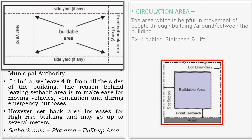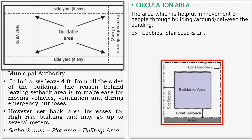The last point is circulation area — the area which is helpful in the movement of people through, around, or between buildings. By the name itself it is understood: lobbies, staircases, and lifts in a building or apartment are called the circulation area. The main points of discussion were plinth area, carpet area, and setback area. We'll see you in the next lecture.